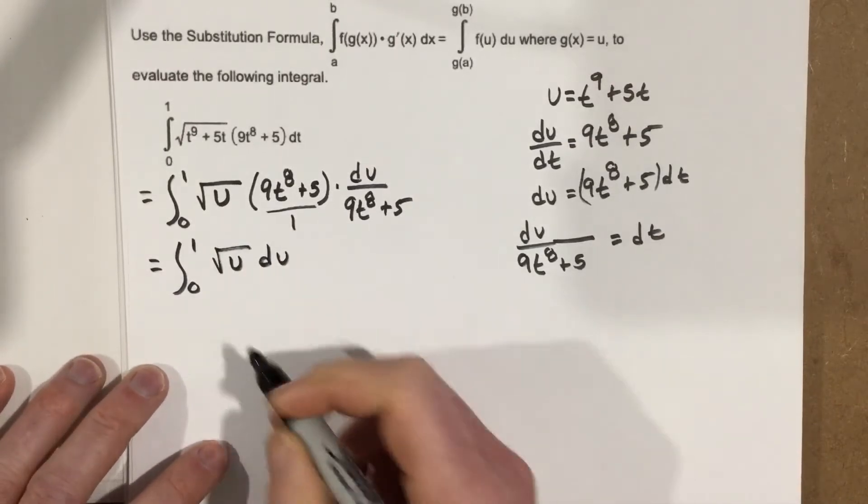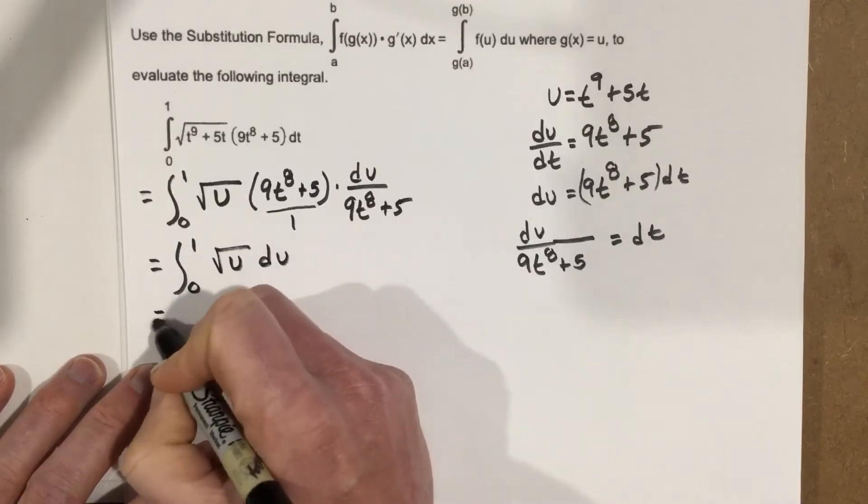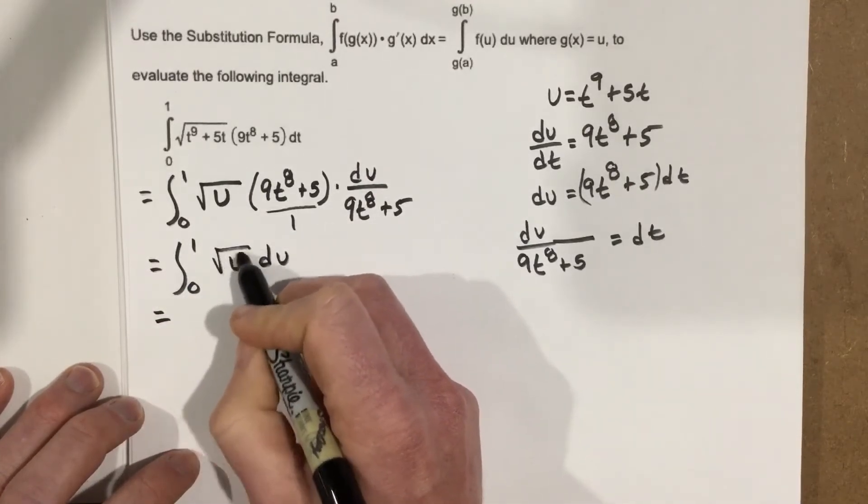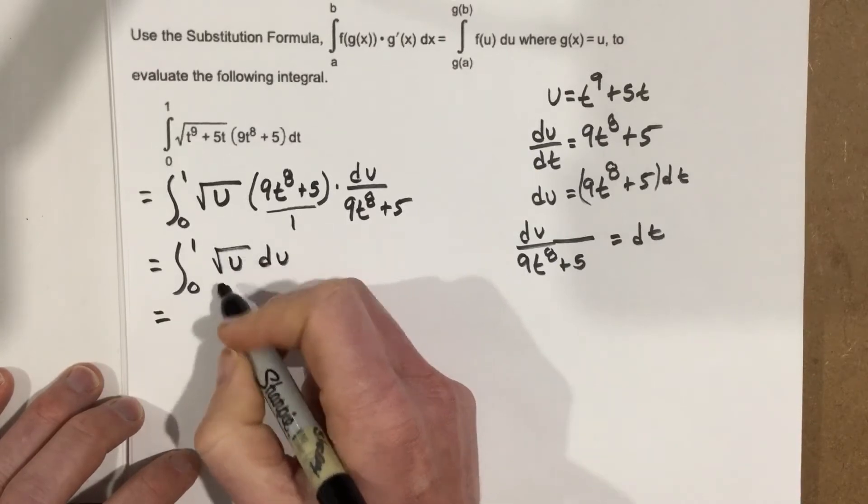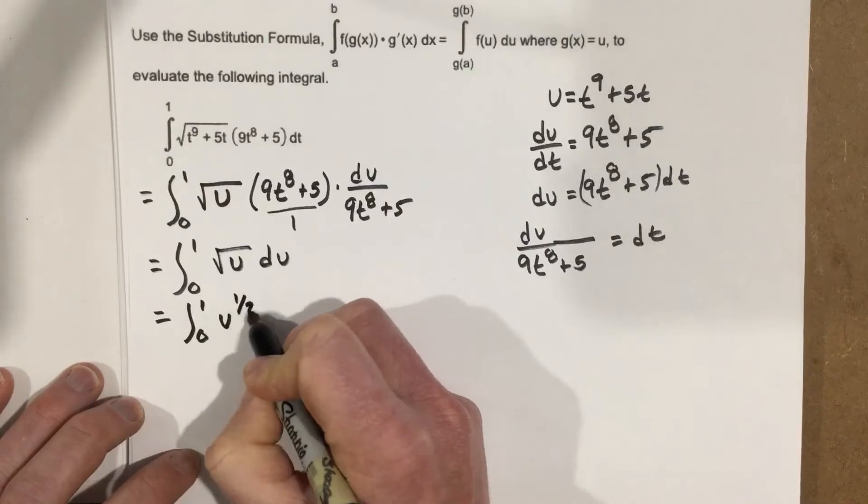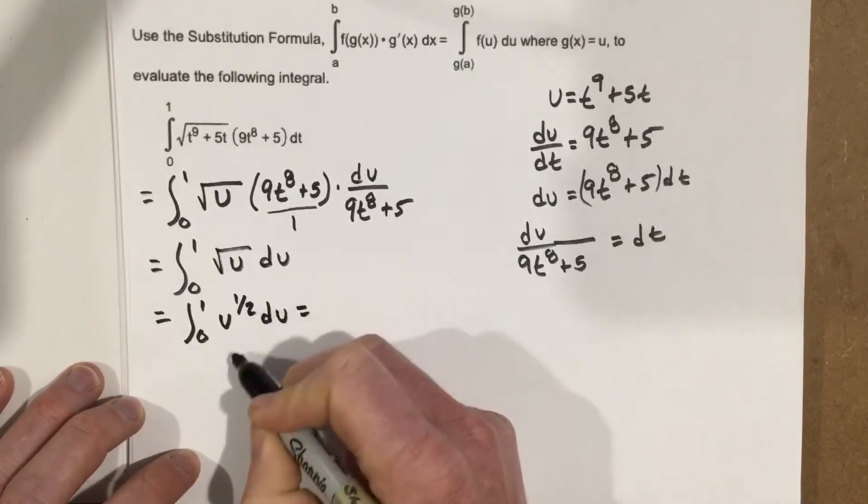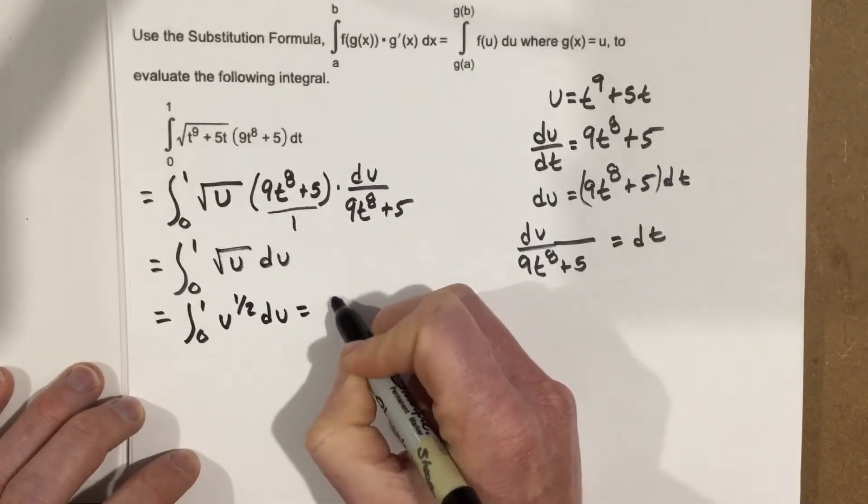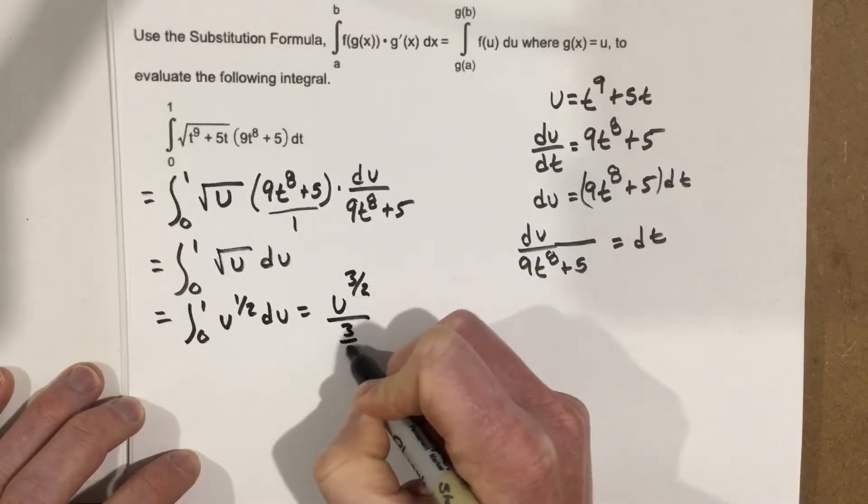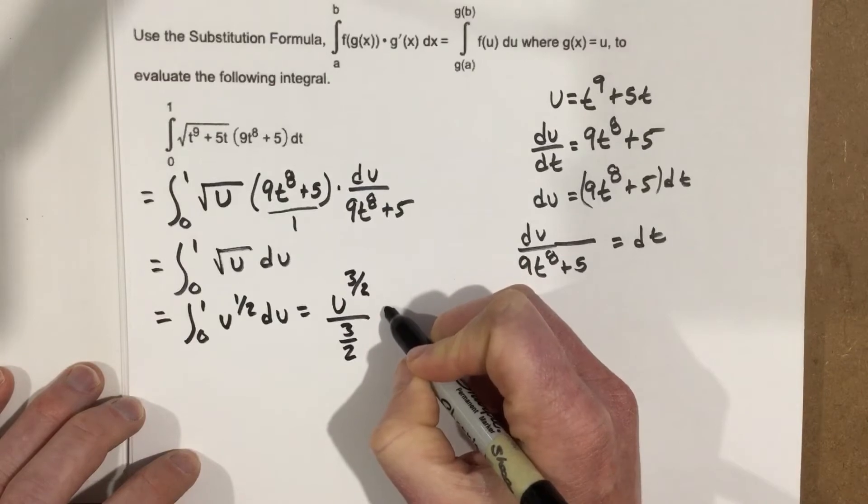So now we can do the actual antiderivative, and when we do that, we get, this is u to the 1/2. So we'll write this as integral 0 to 1, u to the 1/2 du. And then when we integrate it, we add one divide. So we end up with u to the 3/2 over 3/2.